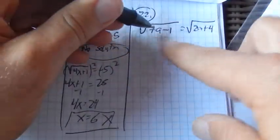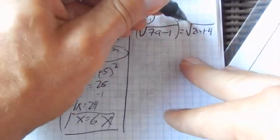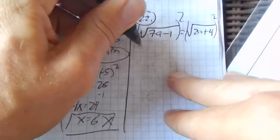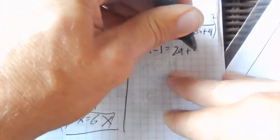22. Square root of something equals square root of something else. Oh yeah, well, square both sides. That does away with those square roots. And now it's just an easier algebra problem.